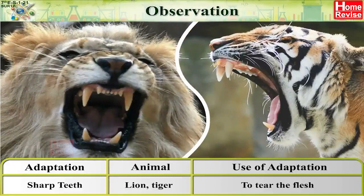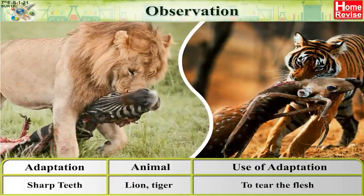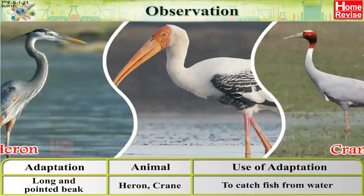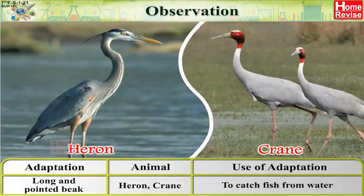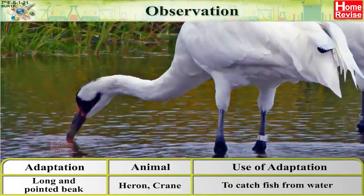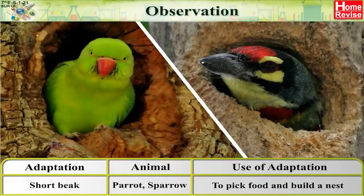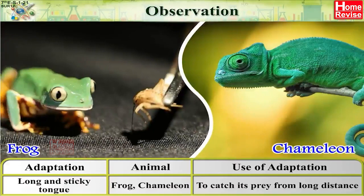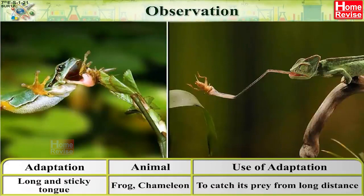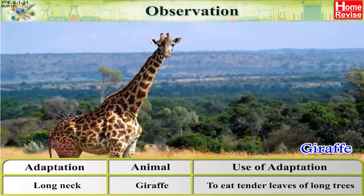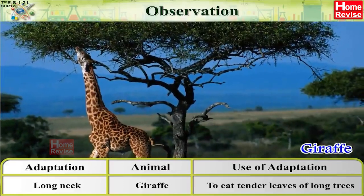Sharp teeth: Lion and tiger use sharp teeth to tear flesh. Long and pointed beak: Heron and crane use them to catch fish from water. Short beak: Parrot and sparrow use the short beak to pick food and build a nest. Frog and chameleon use a long and sticky tongue to catch prey from a long distance. Giraffe uses its long neck to eat tender leaves of tall trees.